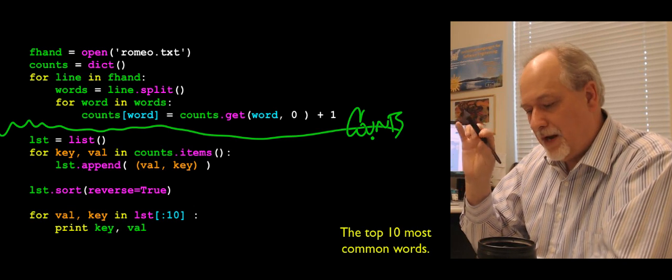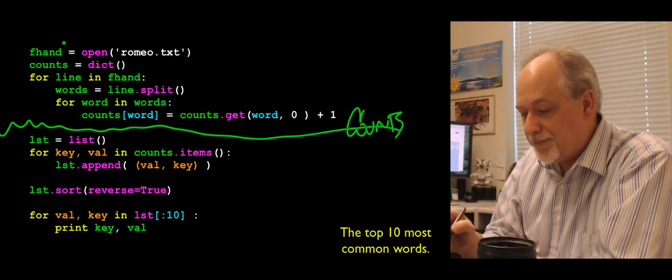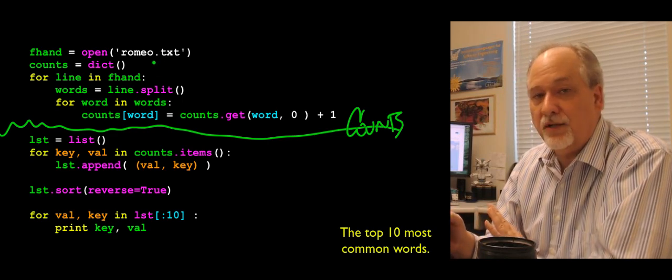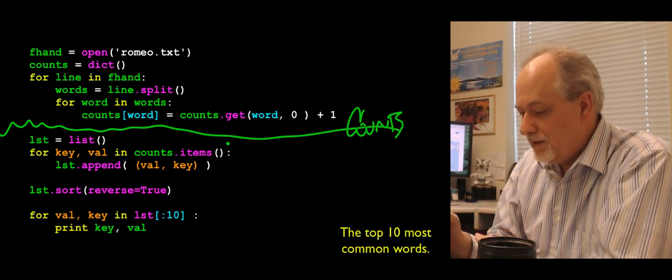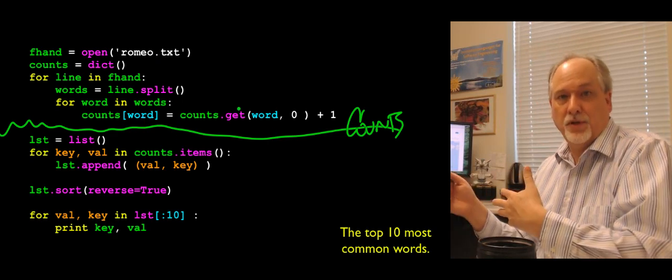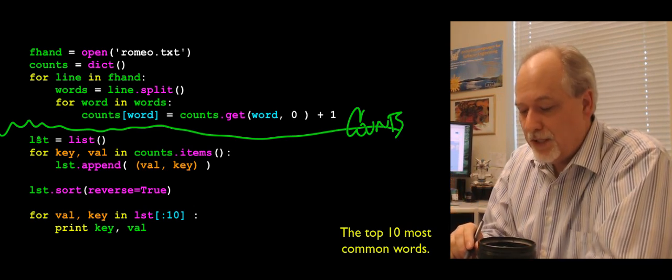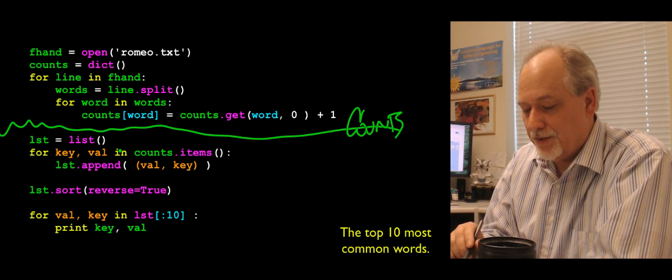Then I'm going to loop through each word in each line and use our histogram or dictionary pattern where I say counts[word] equals counts.get word comma zero. That basically says go look in counts. If the word key exists, give me back the value that's in that. Otherwise, give me zero. So this both creates the new entries and updates old entries all in one nice simple statement. So at the end of this bit of code right here, we are going to have counts with keyword, word count pairs. So this is something we've done before. It's just dictionaries, reading, splitting, and then this pattern of how to accumulate in a dictionary.